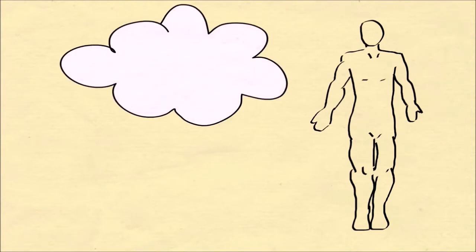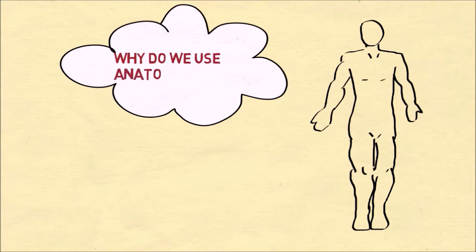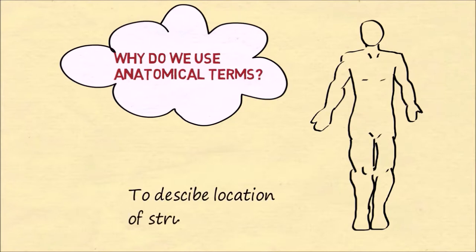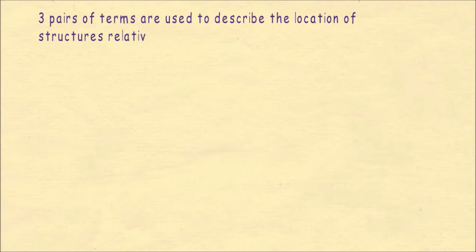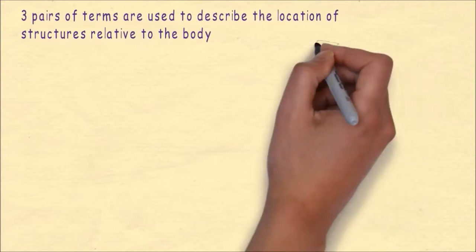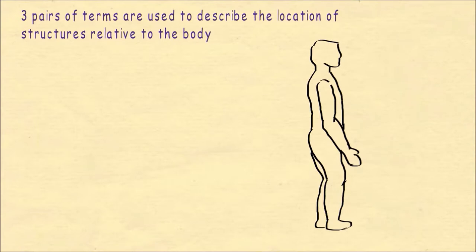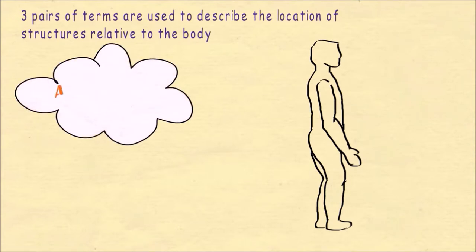The mouth should be closed and the facial expression is neutral. The next question is: why do we use anatomical terms? The answer is to describe the location of structures of the body.